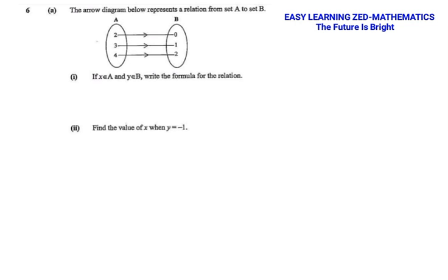The first question asks: if x is in set A and y is in set B, write the formula for the relation. They are not asking us to write the function but to write a formula. So just like I've been saying in the previous video, what I'm going to do first is write y is equal to, then focus on the image of elements in A.